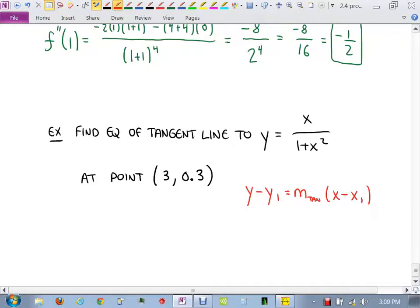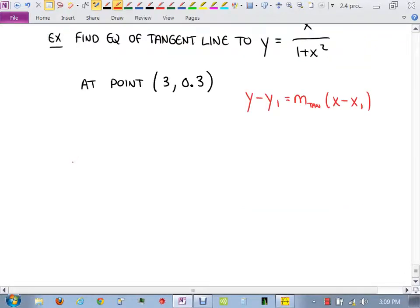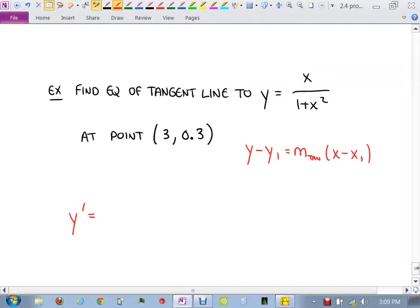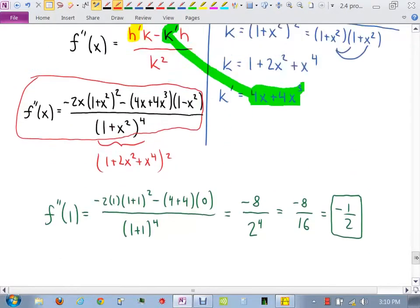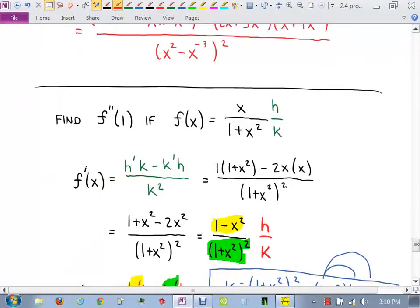We just need to know the slope of the tangent line. The slope of the tangent line is the derivative, right? And then we plug in the x value. So what is our derivative of x over 1 plus x squared? What would we have to do for this? Quotient rule? But we just did this problem, didn't we? Isn't that the exact same problem we just did?